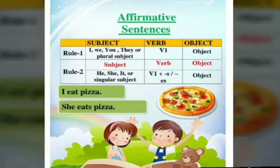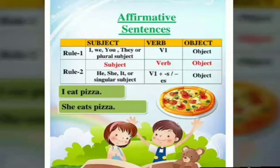So for positive sentences, with I, we, you, they, or with a plural subject, we will use the first form of verb. For example: I eat pizza. And then with he, she, it, or with any singular subject, we will add S or ES with the first form of verb, then we will write the object. For example: she eats pizza. So with I, we just wrote the first form of verb, and with she, we added S.